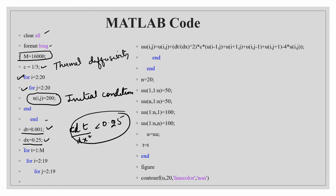I loop t from 1 to the number of iterations (16,000), giving temperature profiles up to 160 seconds — using seconds since thermal diffusivity is in m²/s. Inside, I open inner loops for i and j over the interior nodes (2 to 19), since boundary points at 1 and 20 already have prescribed temperatures and are not updated here.